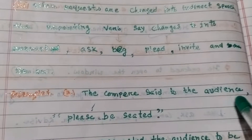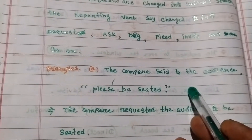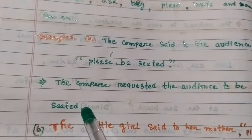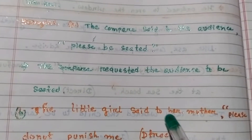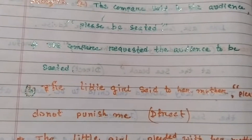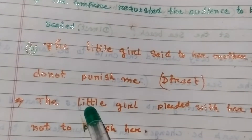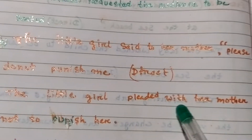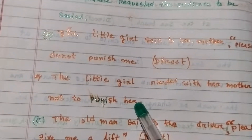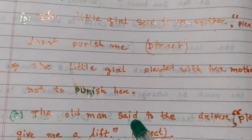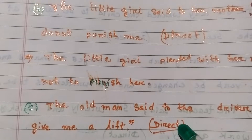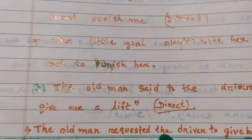Example A: Direct speech — 'The compere said to the audience, please be seated.' In indirect speech: 'The compere requested the audience to be seated.' Example B: Direct speech — 'The little girl said to her mother, please do not punish me.' In indirect speech: 'The little girl pleaded with her mother not to punish her.'